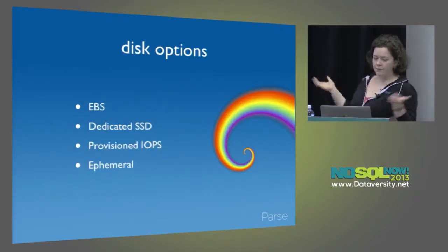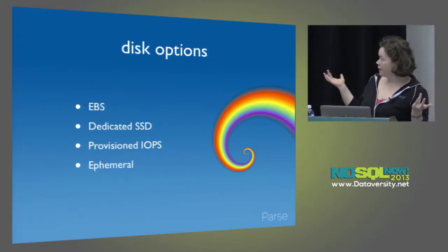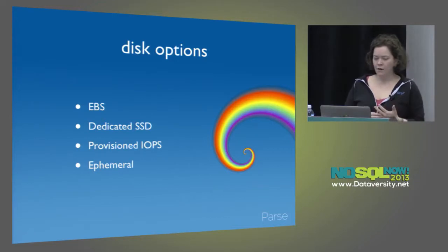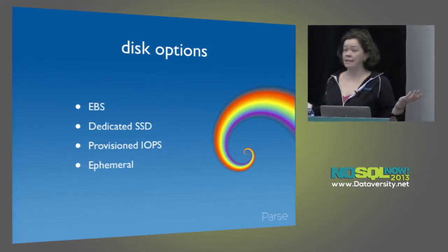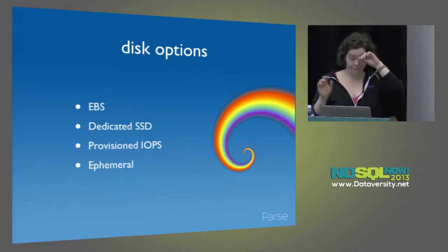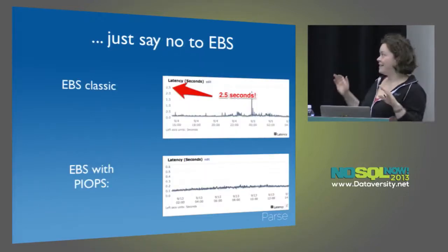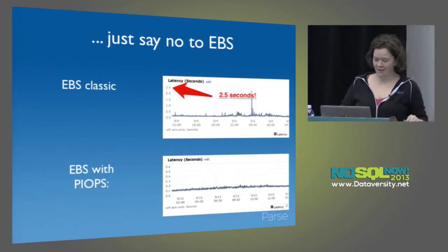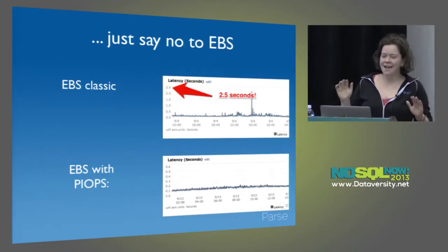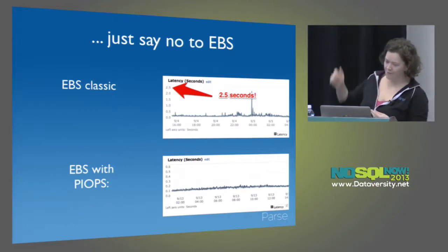If you're on EC2, you have a few choices: the Elastic Block Store (EBS), ephemeral storage, dedicated SSDs, or EBS with provisioned IOPS. If you're not on EC2, this is a really easy question — just get SSDs. You do not want to be dealing with spindles and spinning disks. Classic EBS latency can go up to 2.5 seconds. Provisioned IOPS is much better, as shown by the same workload comparison.